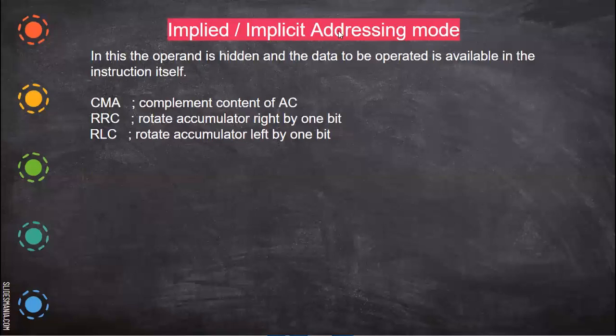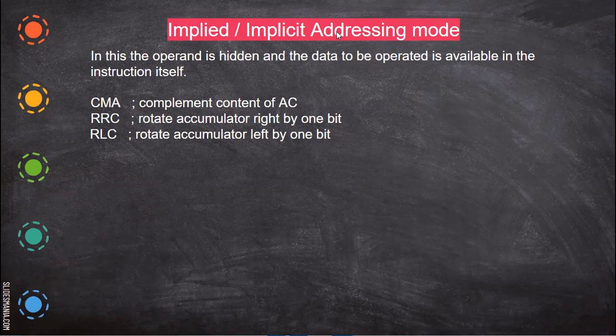In implied addressing mode, the accumulator is not explicitly mentioned — it is implicit. Only the operator is there; the operand is implied, which is nothing but the accumulator. One of the operands is the accumulator and it will not explicitly appear in the instruction. The operand is hidden and the data to be operated is available in the instruction itself. For example, CMA.